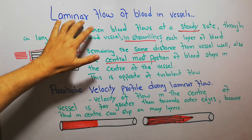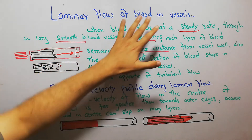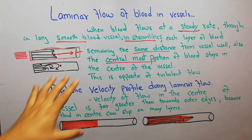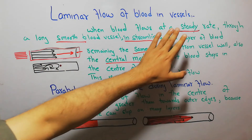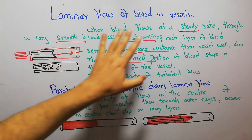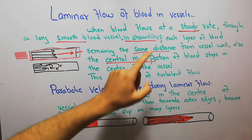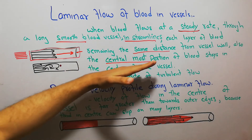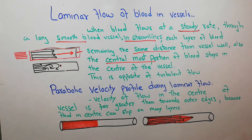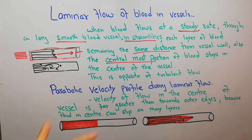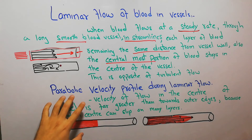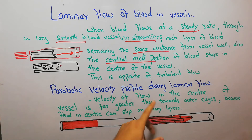If these characteristics — steady rate, smooth blood vessel, streamlines, same distance from wall, and central most portion of blood in the center — are present, it is laminar flow. If these are not present, it is turbulent flow.